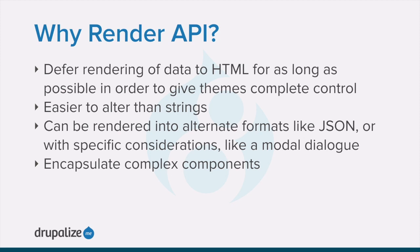Why not have modules return a string of HTML that you can just print out to the page? Render arrays allow Drupal to defer the rendering of content to HTML for as long as possible. This gives other components in the stack the opportunity to influence how that content will ultimately be presented, so many modules can work together on the same content. It's also much easier for themes to deal with. Imagine if in your theme you wanted to print out an article node, but remove the image field from the main content and print it elsewhere on the page. If this was already a complete string of HTML, you would either have to resort to regular expressions, or the expensive task of recreating the complete HTML just to remove something. PHP is much better suited for handling data structured as an array and has all sorts of built-in functionality for manipulating arrays. Structured data can, in theory, be rendered to any format, not just HTML. And finally, the render API provides really awesome ways to encapsulate complex logic into reusable elements.